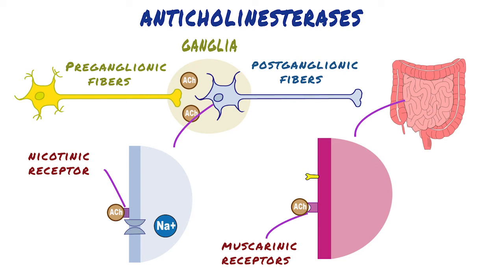The muscarinic receptor, on the other hand, is a membrane protein. Upon stimulation by neurotransmitter, it causes the opening of ion channels indirectly through a second messenger.